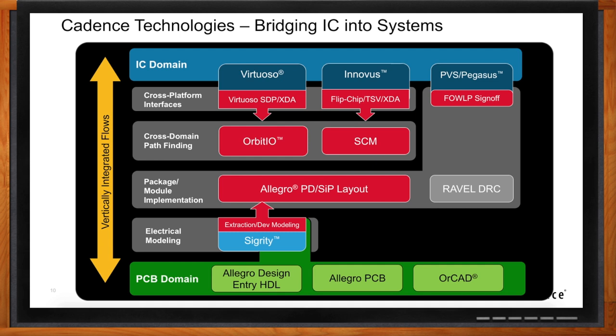Our customers that are starting to see these advanced packages — that sometimes look like a chip and sometimes look like a package — need to be able to move seamlessly between the chip domain and the packaging domain. We've announced a couple of vertically integrated flows to address that. One example would be based on the InFO flow from TSMC — the ability to move from the IC domain into the advanced packaging domain for the RDL layers, and then take that data and move it back up into the IC domain for final verification and sign-off.